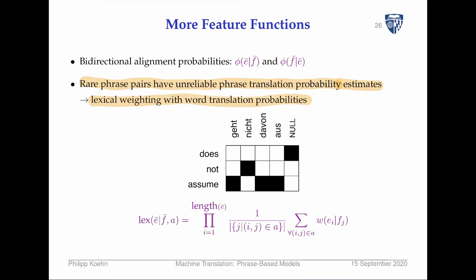So maybe we should also use lexical weighting with word translation probabilities — still do the word-to-word mapping. We compute how likely 'assumes' is a translation of 'geht,' how likely of 'nicht,' and so on.